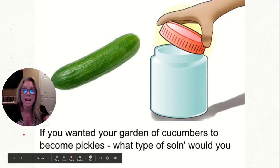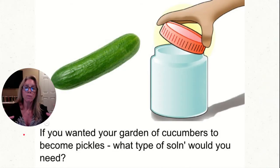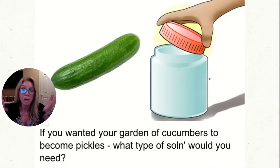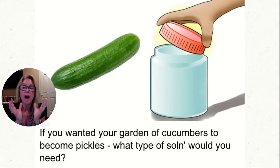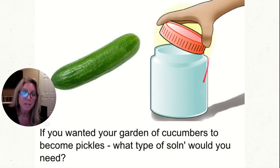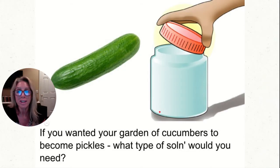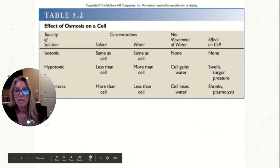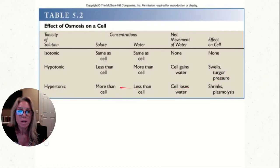If you wanted to make a pickle — pickles are made from cucumbers — you would need a hypertonic solution in the pickle jar. Water must flow from the hypo, so it leaves the cucumber and it shrinks down to pickle size. If you add dill and salt to make the hypertonic solution, it'll be a dill pickle. If you use sugar to make the hypertonic solution, you get sweet pickles.